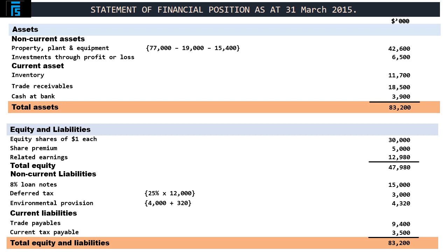On to non-current liabilities, which begin with the 8% loan notes. As we already established in the previous module, the figure reported in the trial balance must be adjusted for the fact that one quarter of the notes were in fact redeemed, leaving the balance at $15,000. Next is the deferred tax liability, which we already computed in accordance with note 5, as 25% of $12,000 or $3,000. The next item is the environmental provision, which had a carrying amount of $4,000 at 1st April 2014, and was subsequently adjusted upward for the unwinding of the discount equal to $320, giving a result of $4,320, and a grand total of $22,320 for non-current liabilities overall.